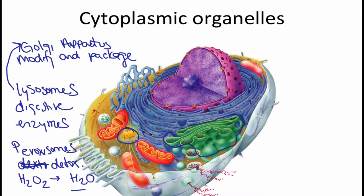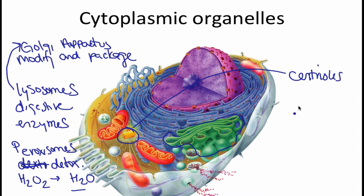Let's talk about centrioles next. Centrioles are rod-shaped organelles and their function is for cell division. Spindle fibers or asters are going to hook onto centrioles for cell division — that's the prophase, metaphase, anaphase, telophase process.